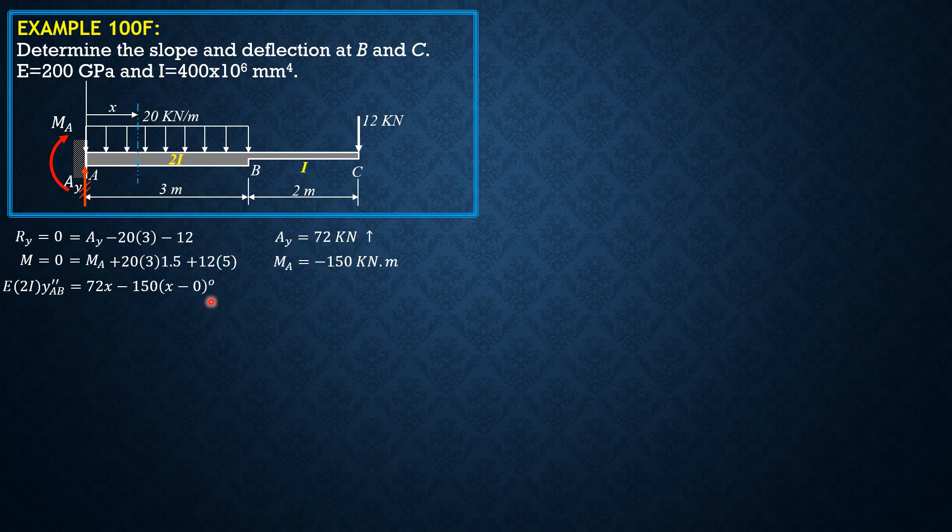Then minus the moment of this loading, 20 times X times X over 2, so minus 10X squared. So let's simplify this first by dividing everything by 2. So EI Y double prime AB equals 36X minus 75 quantity X minus zero raised to zero minus 5X squared.